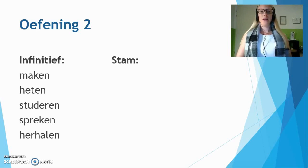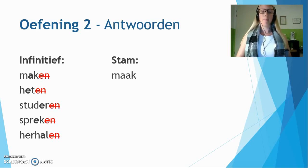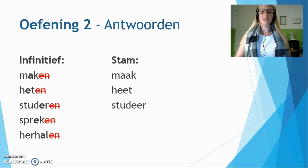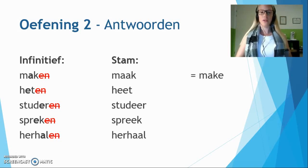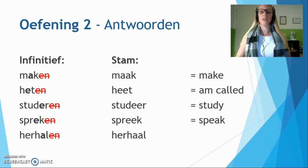Time for the answers. Maken: remove -en, we have one k, so we have to double the a — maak. Heten: remove -en, we have one consonant t, so we double the e — heet. Studeren: remove -en, left with one consonant r, double the e — studeer. Spreken: remove -en, one consonant k at the end, double the e — spreek. Herhalen: remove -en, left with one l, duplicate the e — herhaal. Translations: maak — make; heet — I'm hot; studeer — study; spreek — speak; herhaal — repeat.